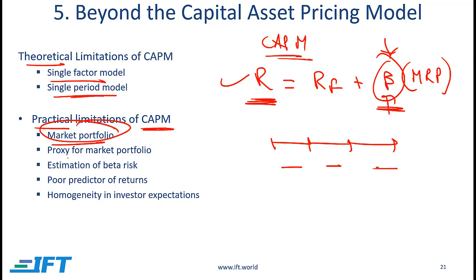The next point has to do with a proxy for the market portfolio. Since the true market portfolio is not investable, market participants use different proxies. For example, in the US, some participants will use the S&P 500 as a proxy for the market. But different analysts or market participants might use different proxies, meaning the expected return will differ depending on which market proxy is used.